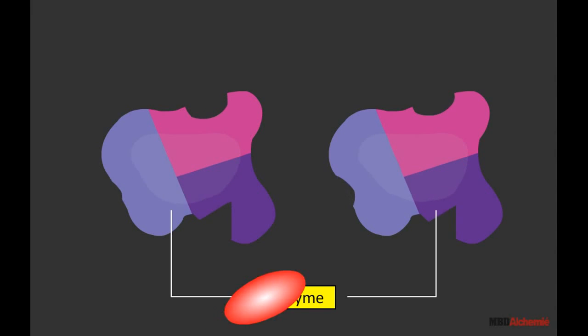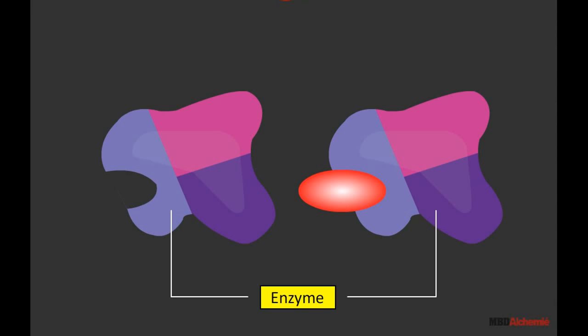On the other hand, if an inhibitor binds with the enzyme at allosteric site, then the substrate cannot bind with the enzyme.